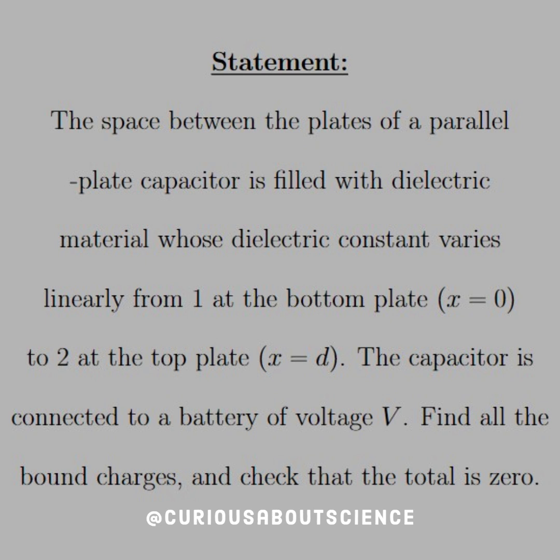The space between the plates of a parallel plate capacitor is filled with dielectric material whose dielectric constant varies linearly from one at the bottom plate, or x equals zero, to two at the top plate, x equals d. The capacitor is connected to a battery of voltage V. Find all bound charges and check that the total equals zero.